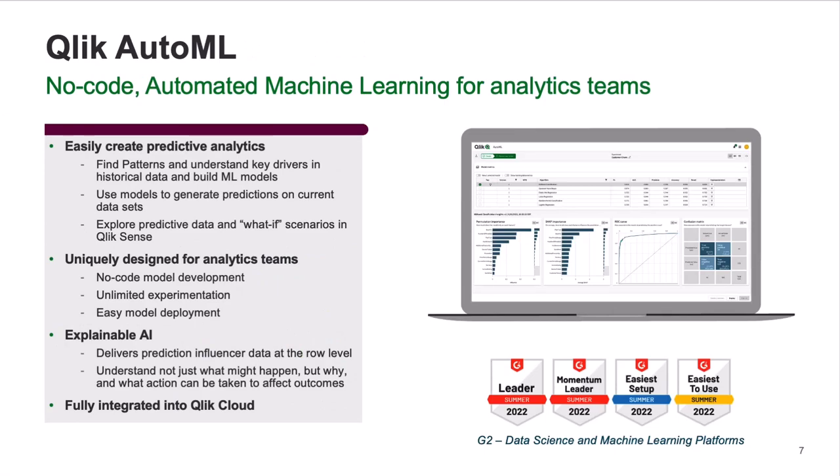Qlik AutoML is our end-to-end machine learning solution that gives you the ability as an analytics user to create predictive analytics without having to be a full-blown data scientist. Knowing a little bit about data science and predictive analytics, you can as an analytics user bring in historical data, test models, and understand all the key drivers in your data. Then, using those models, you can deploy them and generate predictions with full explainability data, move those predictions into Qlik Sense, and use the real-time connector to explore what-if scenarios. It's a no-code experience built for analytics users and teams.